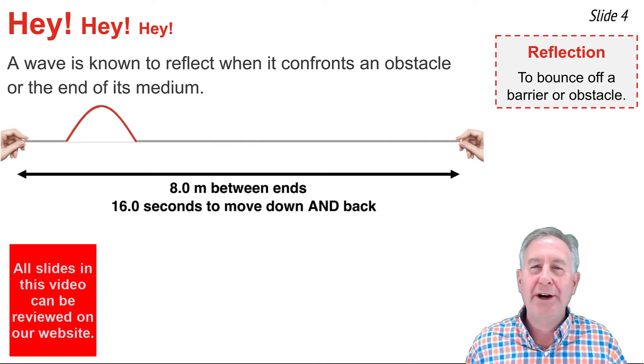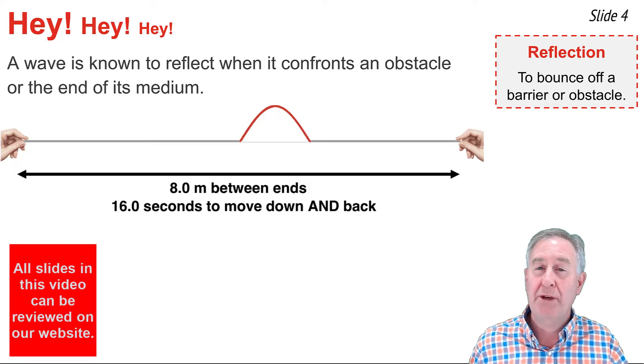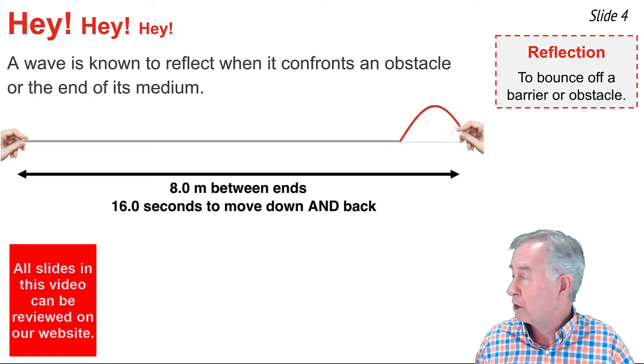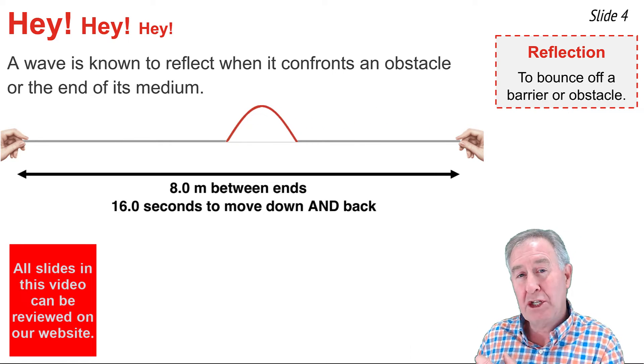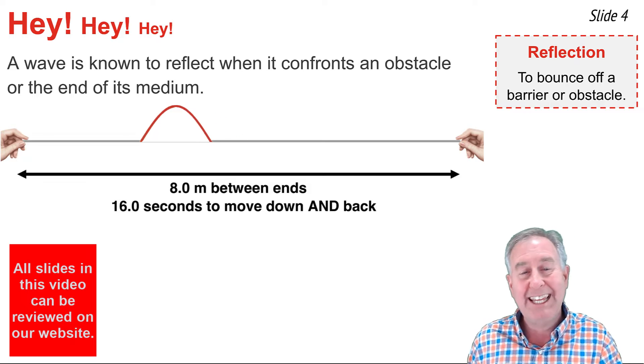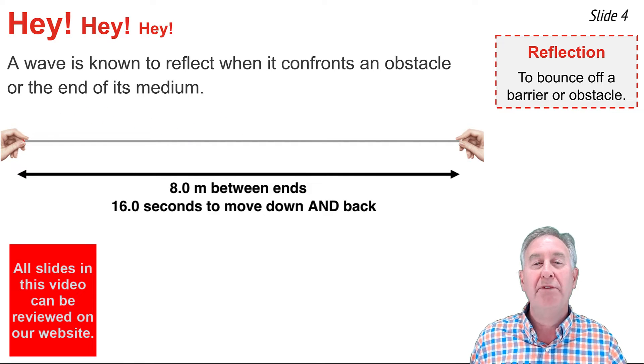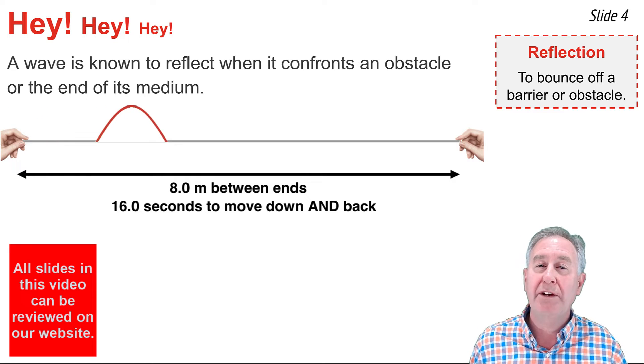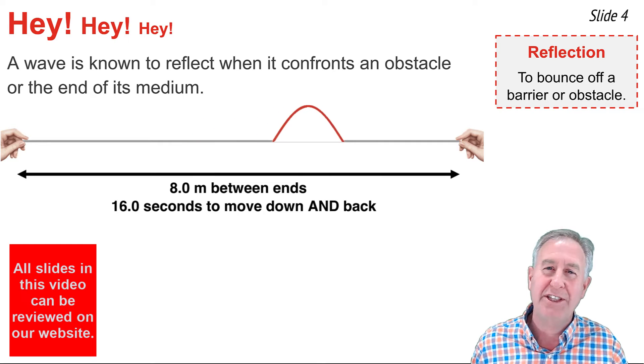When a wave encounters the end of a medium, or an obstacle in its path, it often undergoes the behavior of reflection, the bouncing off that obstacle, or off the end of the medium, and a return to the original position. That's the case here in this animation, which a wave travels from end to end 8 meters, and it takes 16 seconds to travel from the left end to the right end and back.